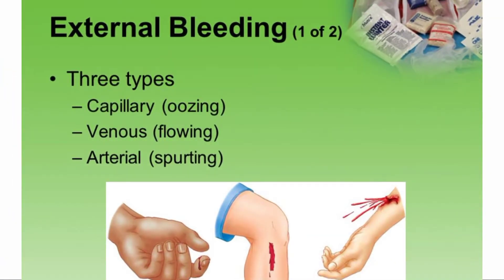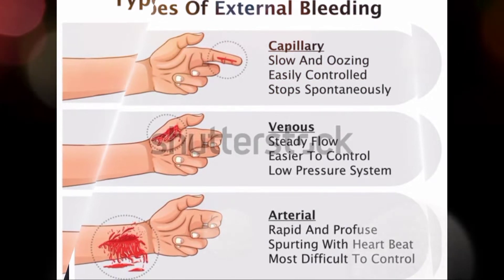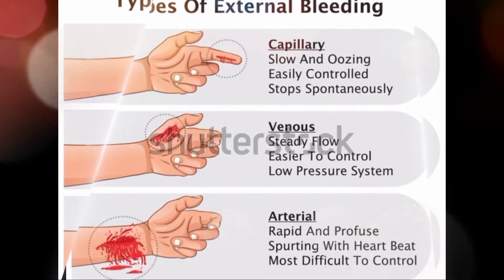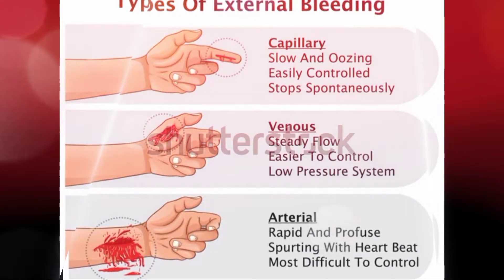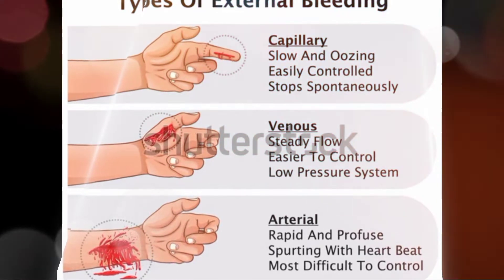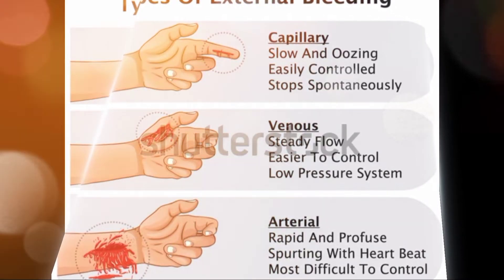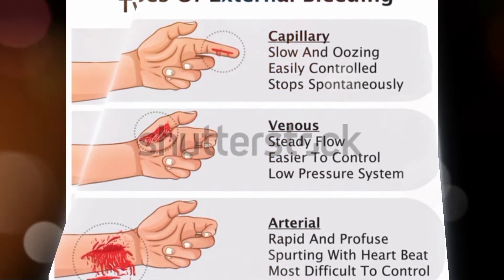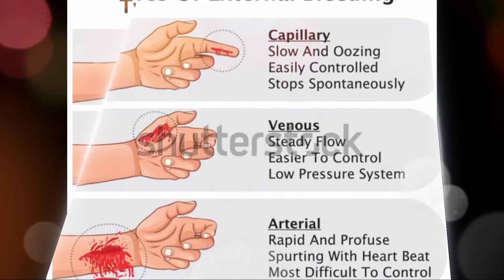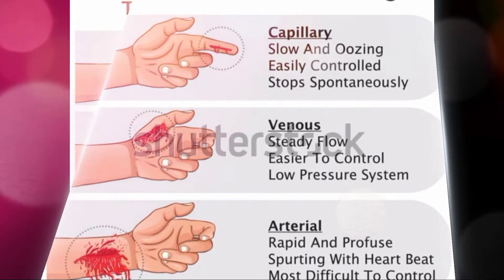There are two types of external bleeding. Number one, it's capillary. Number two, it's venous. And then arterial. For capillary, it is slow and oozing — easily controlled and it will stop spontaneously. For venous, the flow is steady and it is easily controlled, just like capillary, and you can apply a low pressure system. For arterial, it is rapid and profuse, spurting with the heartbeat, and it is the most difficult to control.